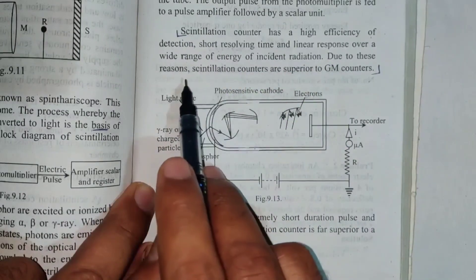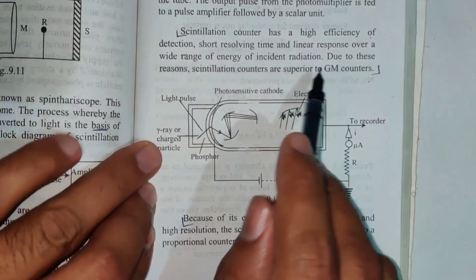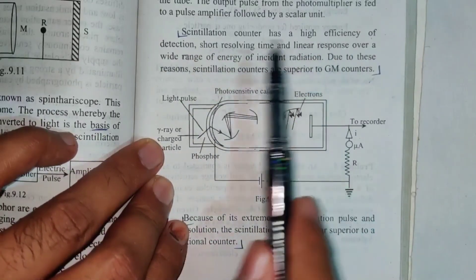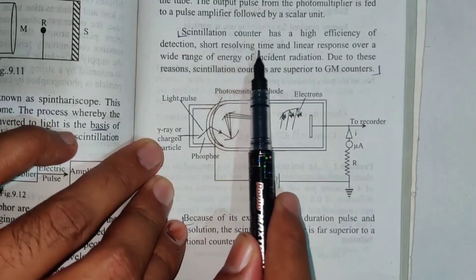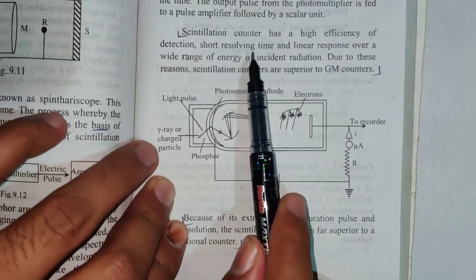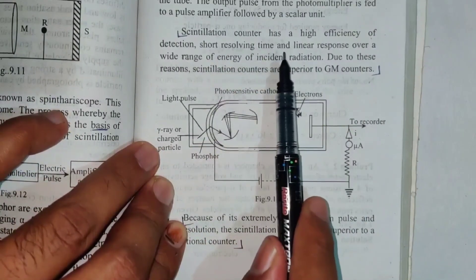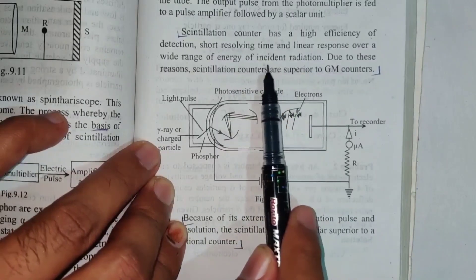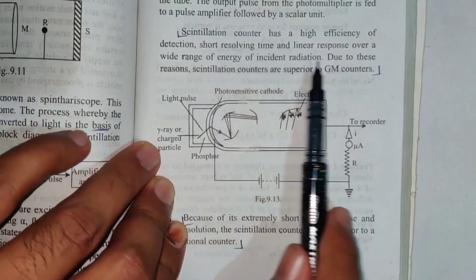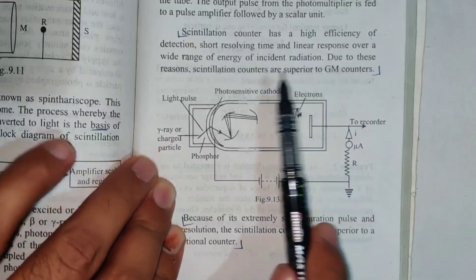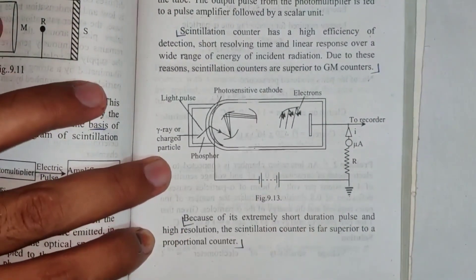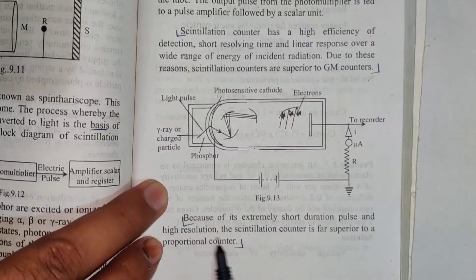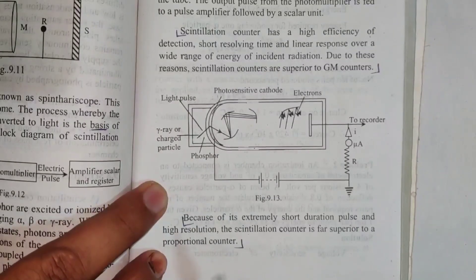Due to these reasons, the scintillation counter has high efficiency of detection, short resolving time, and a linear response over a wide range of energy of incident radiation. These reasons make scintillation counters superior to GM counters. It is better than a proportional counter as well.